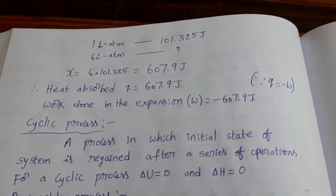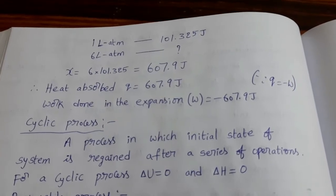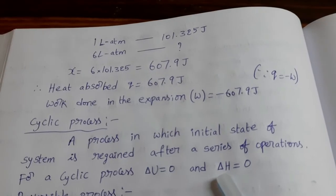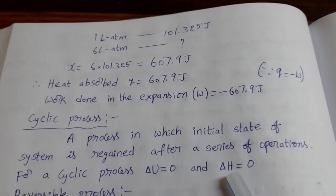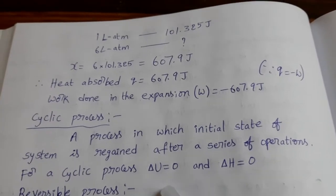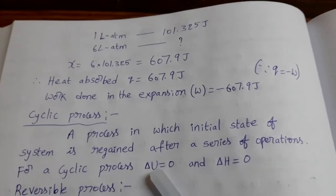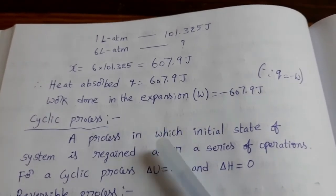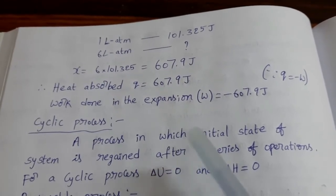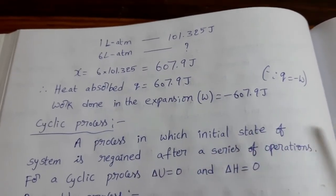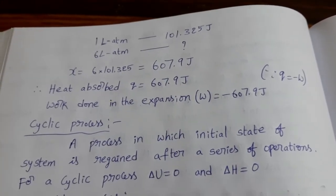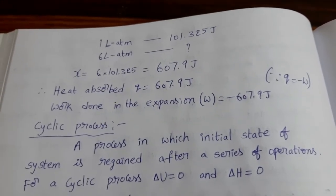For this type of cyclic process, the change in internal energy delta U equals zero, and delta H — change in enthalpy — is also equal to zero. So a cyclic process starts, converts to another stage, follows another stage, and finally reaches the same initial state.